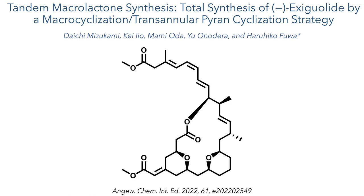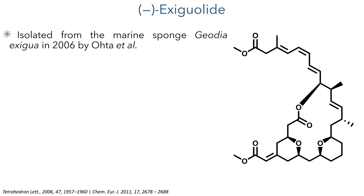This work was published in Angewandte Chemie by the Fuwa group, who have previously published a synthesis of this molecule back in 2011. Exigeolide was first isolated in 2006 by Ota et al. from the marine sponge Geodea exigua.